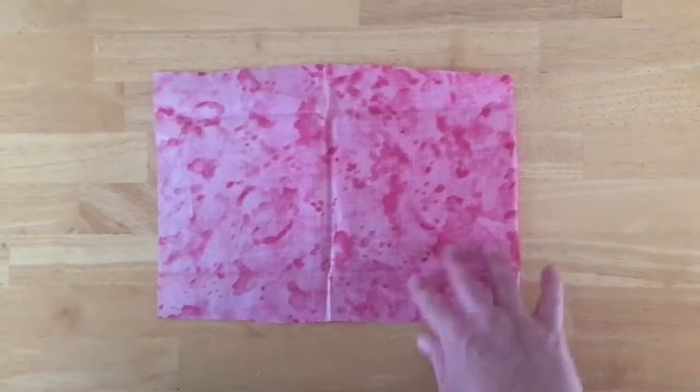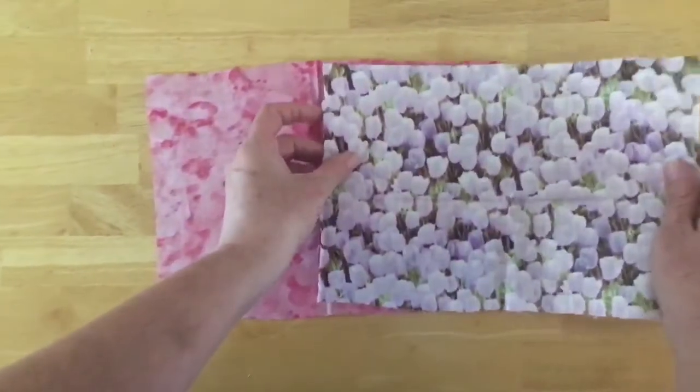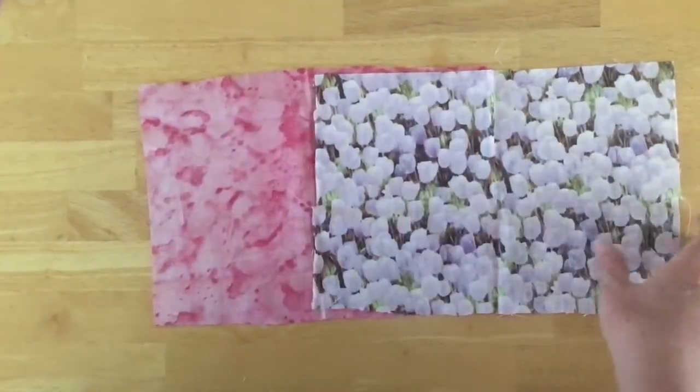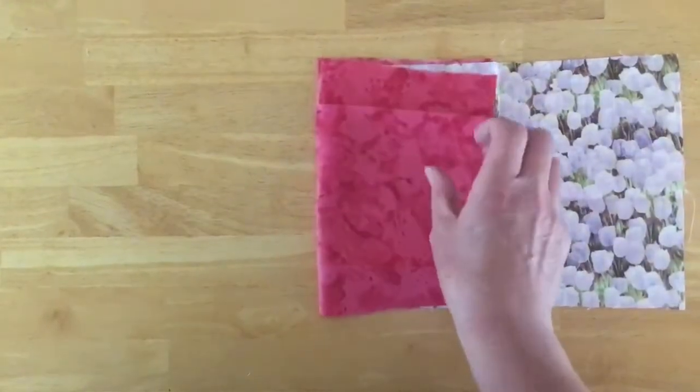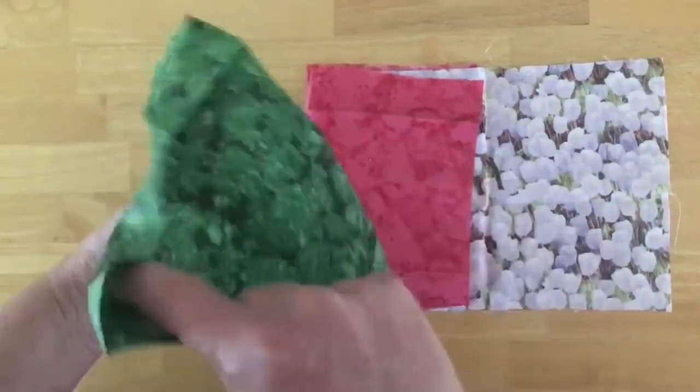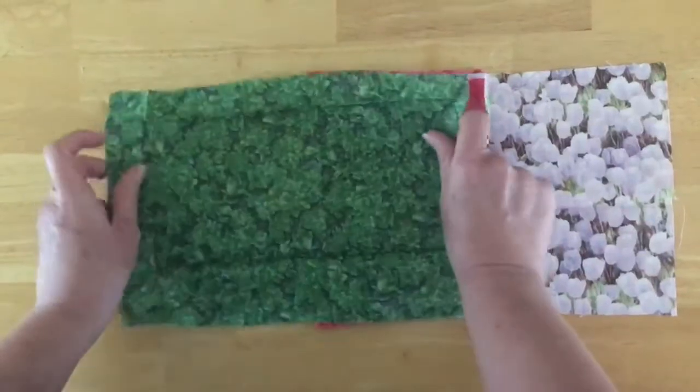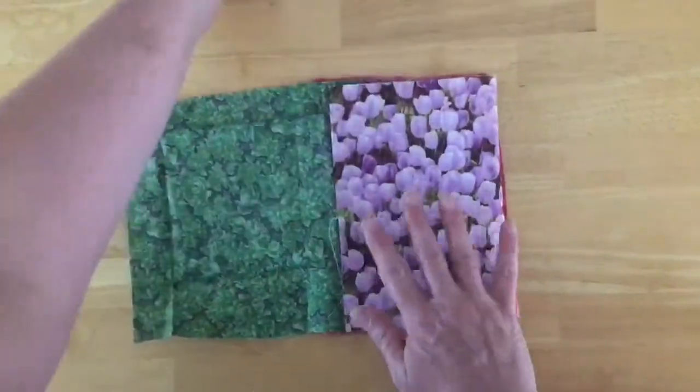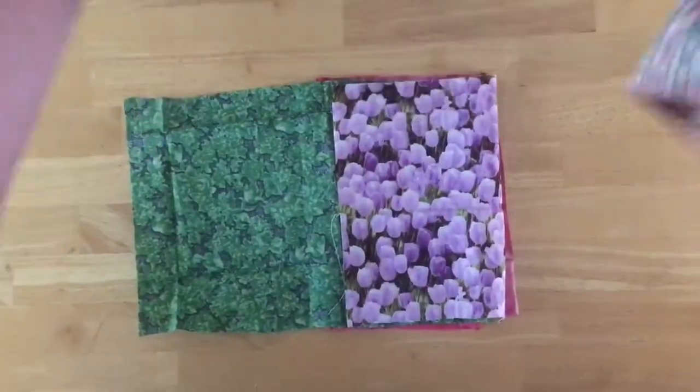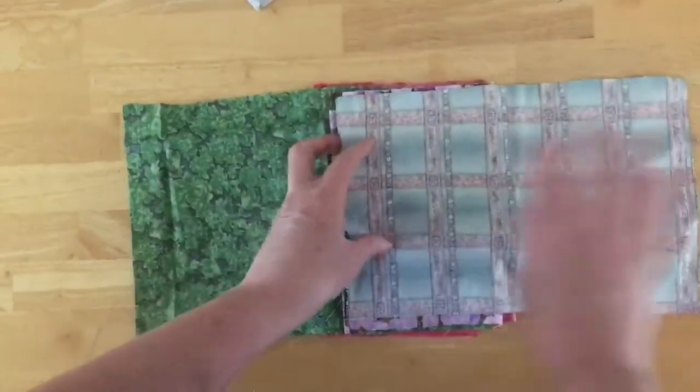Miss Jen is going to show us how to layer this project appropriately. Lay it horizontally and fold over. Now we're going to add our next piece and go to the opposite end and fold over. We're going to go back and forth like this with all the different material that you have on hand.